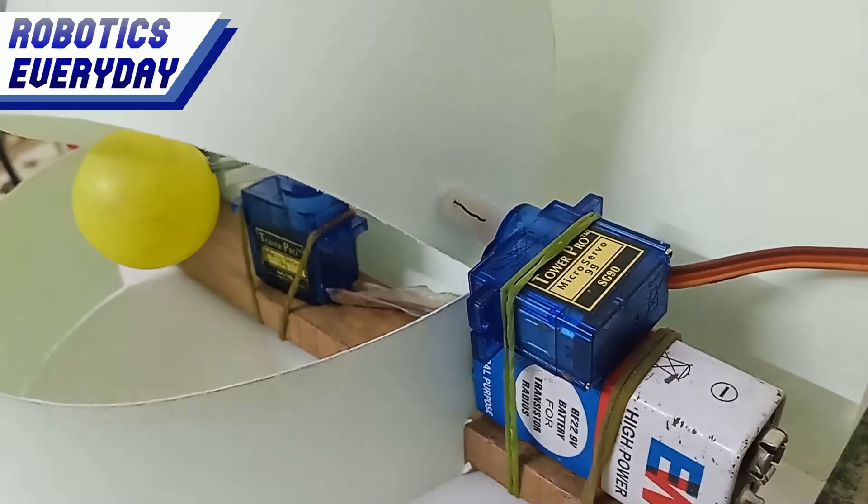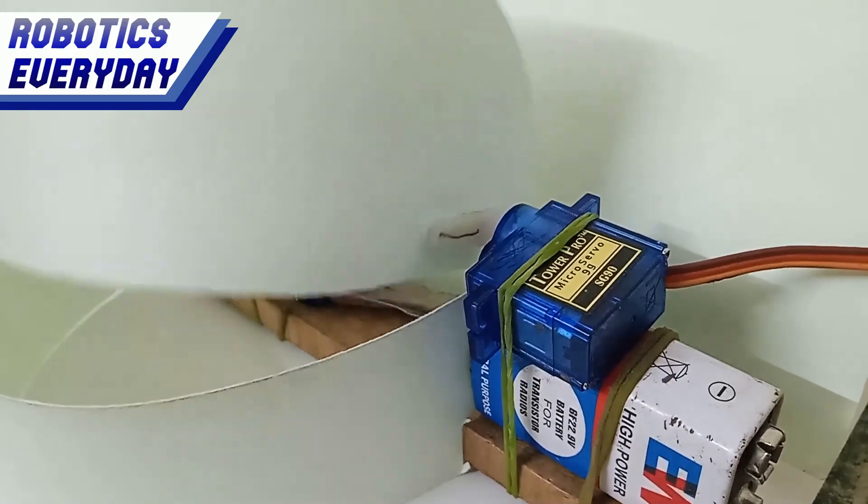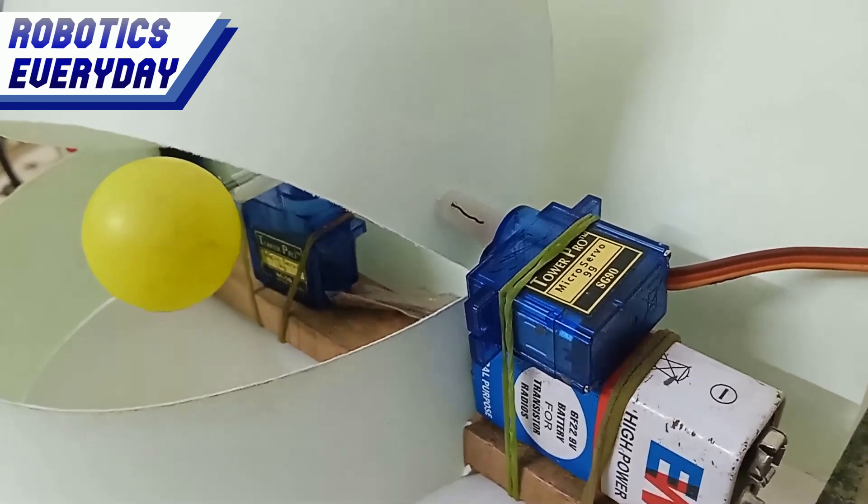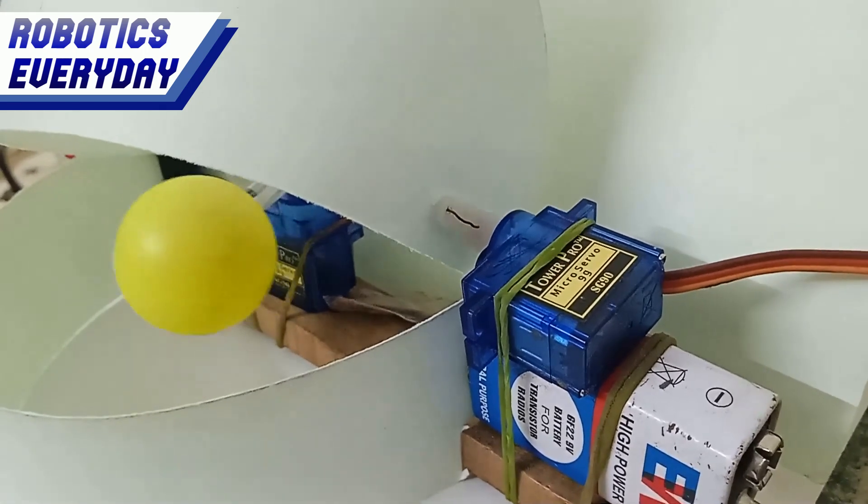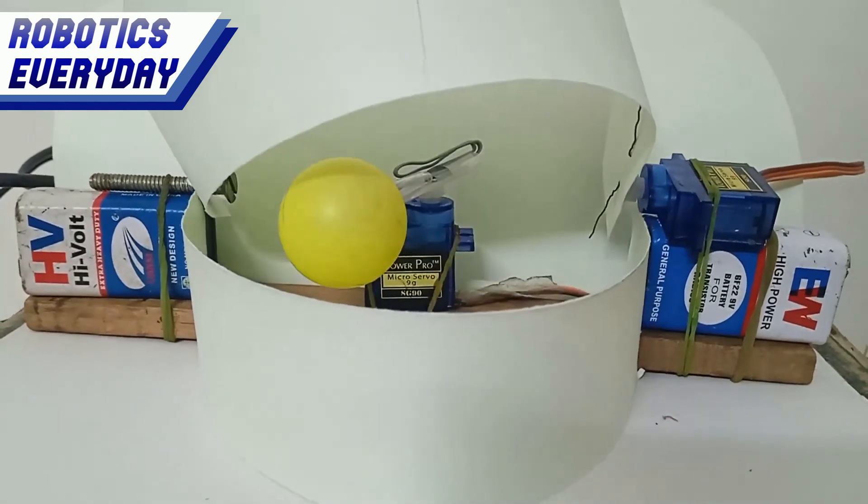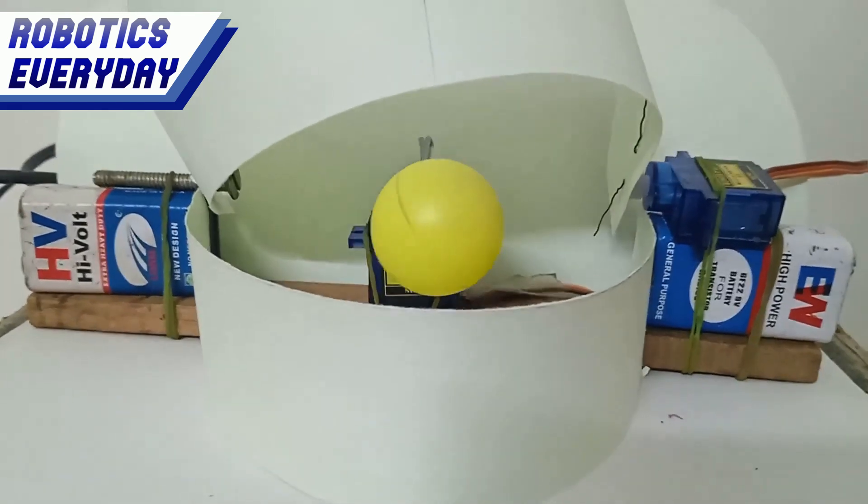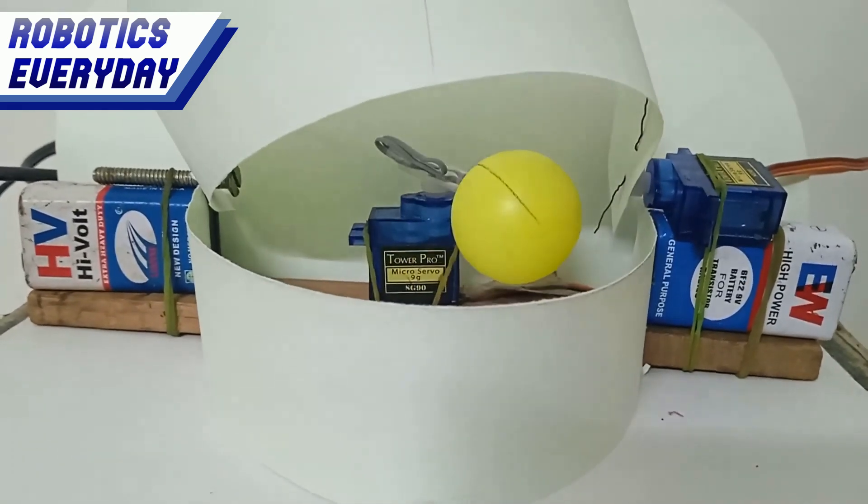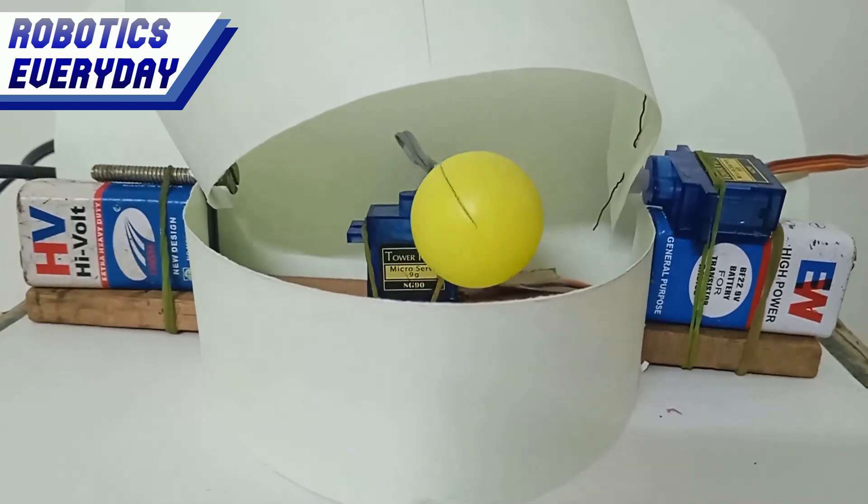The bottom eyelid in this robotic eye setup is also attached to the structure. Unlike the top eyelid, the bottom eyelid remains stationary and does not move. Its primary function is to keep the eyeball covered and protected. The robotic eye maintains a more realistic appearance by incorporating a static bottom eyelid.